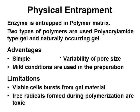Physical entrapment: enzyme is entrapped in a polymer matrix. The bio-catalyst is dissolved in a solution of the polymer's precursors, and polymerization is initiated. Two types of polymers are used: polyacrylamide-type gel, and naturally occurring gel materials such as cellulose acetate, agar, gelatin, carrageenan, and alginate. Advantages: it is simple and provides variability of pore size for immobilization. Mild conditions are used in preparation. Limitations: viable cells burst from gel material, and free radicals formed during polymerization are toxic.